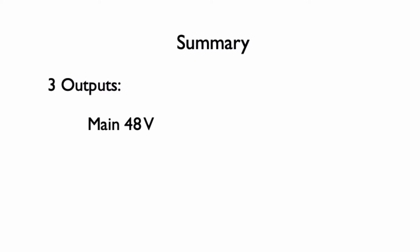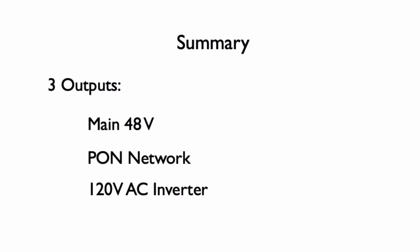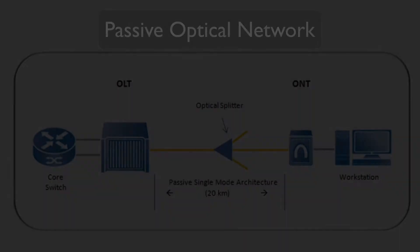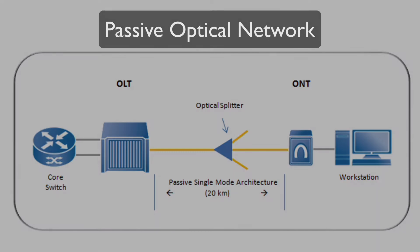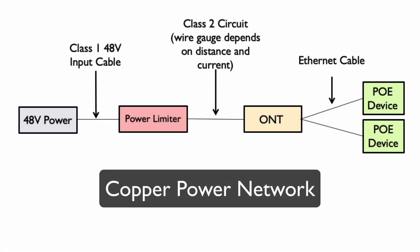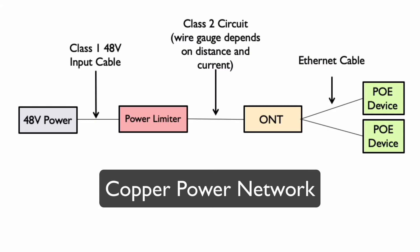These two other voltages are a passive optical power network and 120 volt AC output for the computers and monitors. In my second video, I explained what a passive optical network is and how one can be powered by a parallel copper power network. And in my third video, I designed a parallel copper power network for a specific passive optical network and computed the current draw needed from the 48 volt DC to supply it.